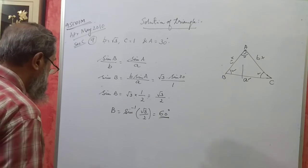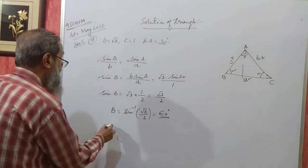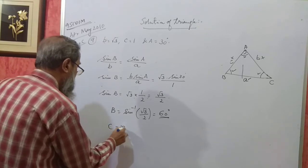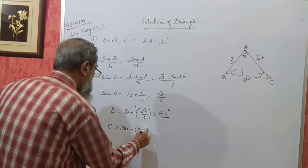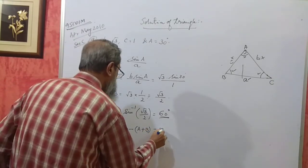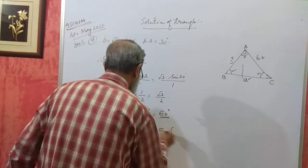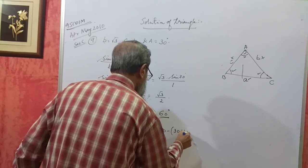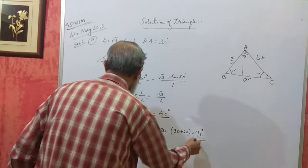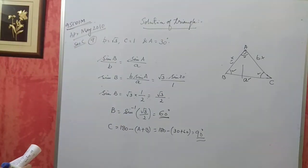Then angle C will be 180 minus A plus B, that is 180 minus 30 plus 60 equals 90 degrees. So angle C is 90 degrees.